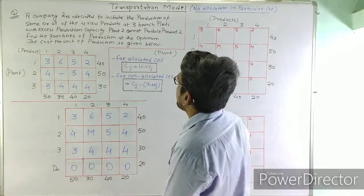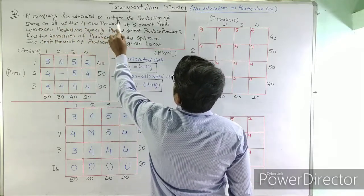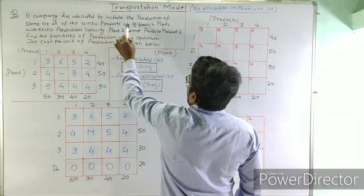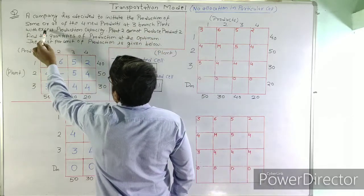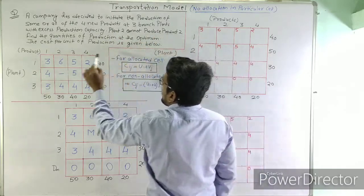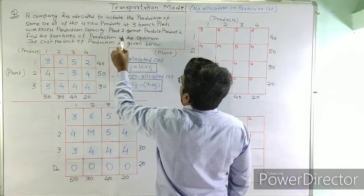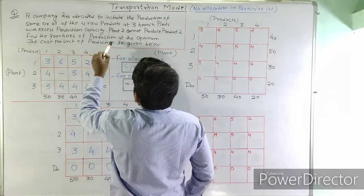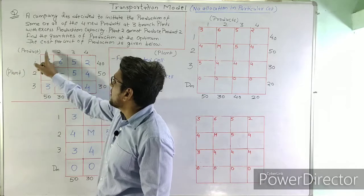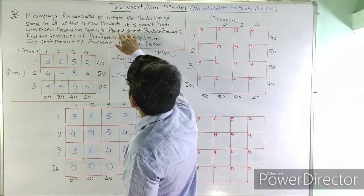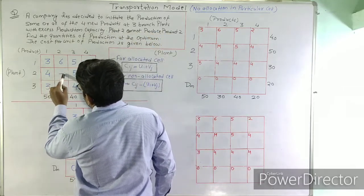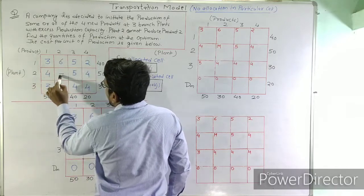The problem says that a company has decided to initiate the production of some or all of the four new products at three branch plants with excess production capacity. Plant 2 cannot produce product 2. We need to find the quantities of production at the optimum. The cost per unit of production is given, and in the cost matrix this restriction is shown by a dash.